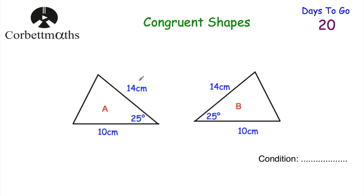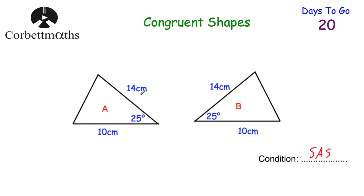In the final question, two congruent triangles both have sides of 14 centimetres and 10 centimetres with the same angle in between them. That gives us the condition Side-Angle-Side (SAS), which is why these two triangles are congruent to each other.